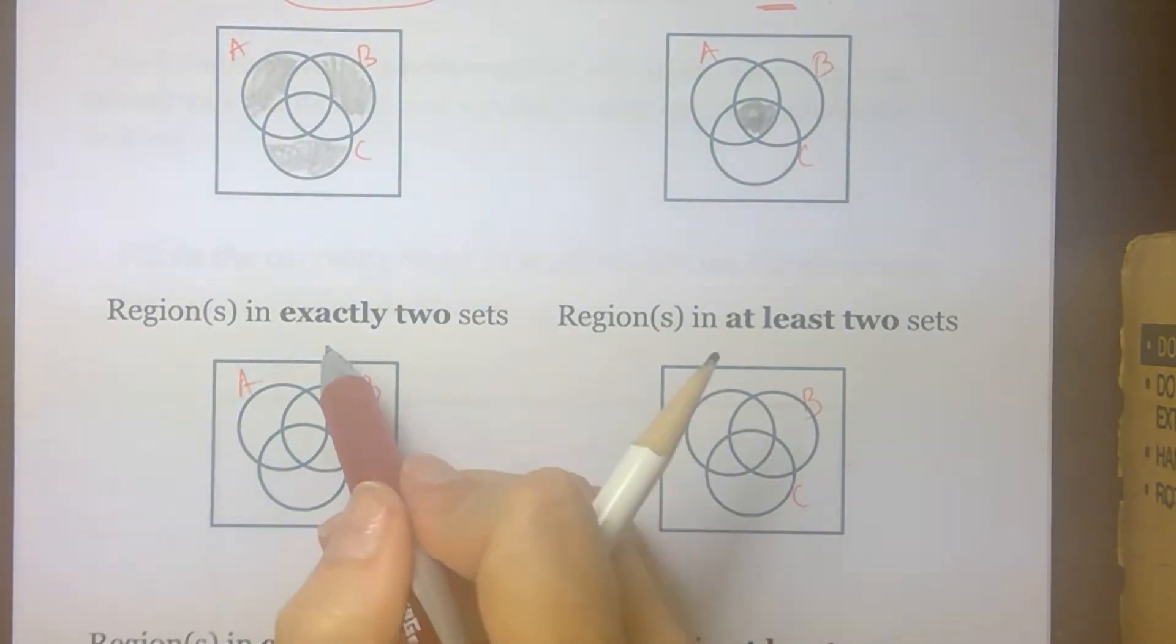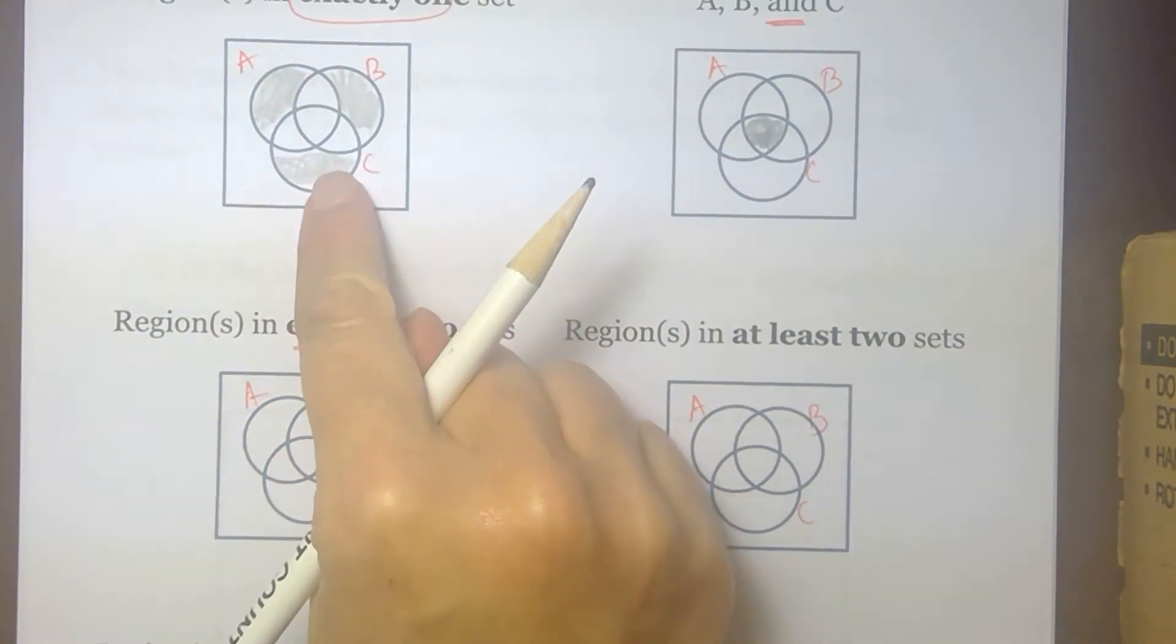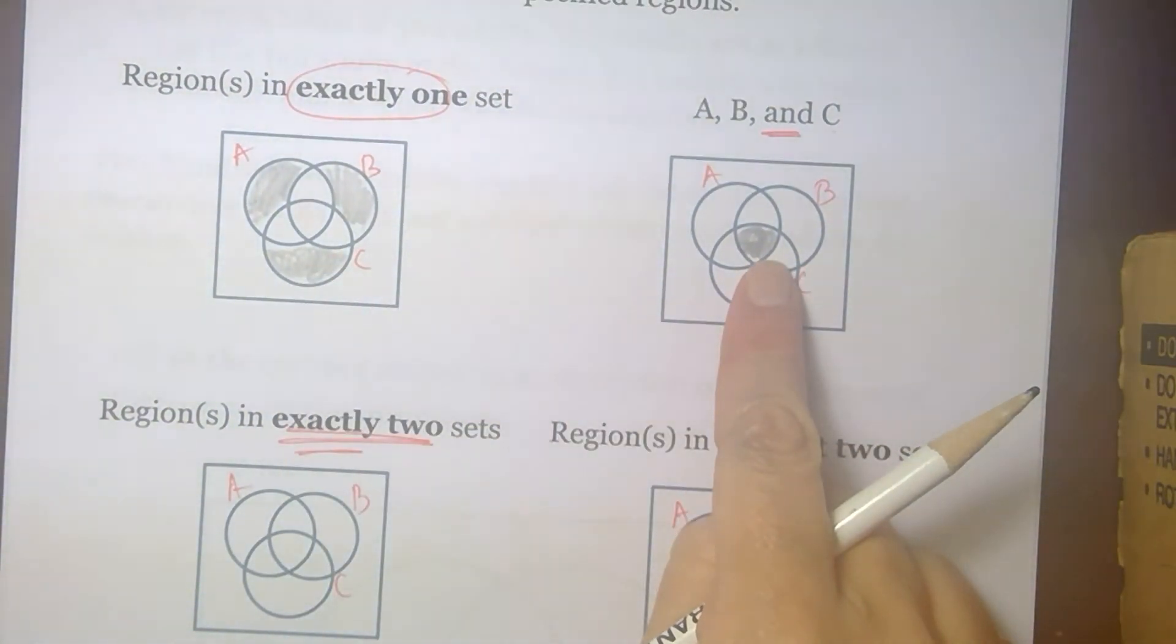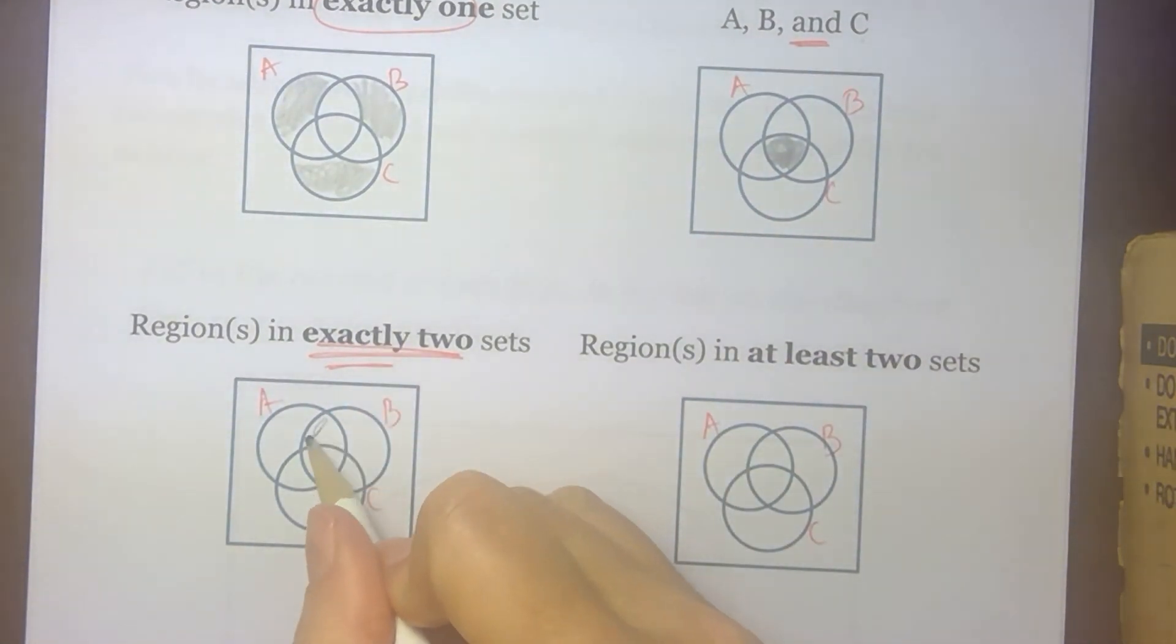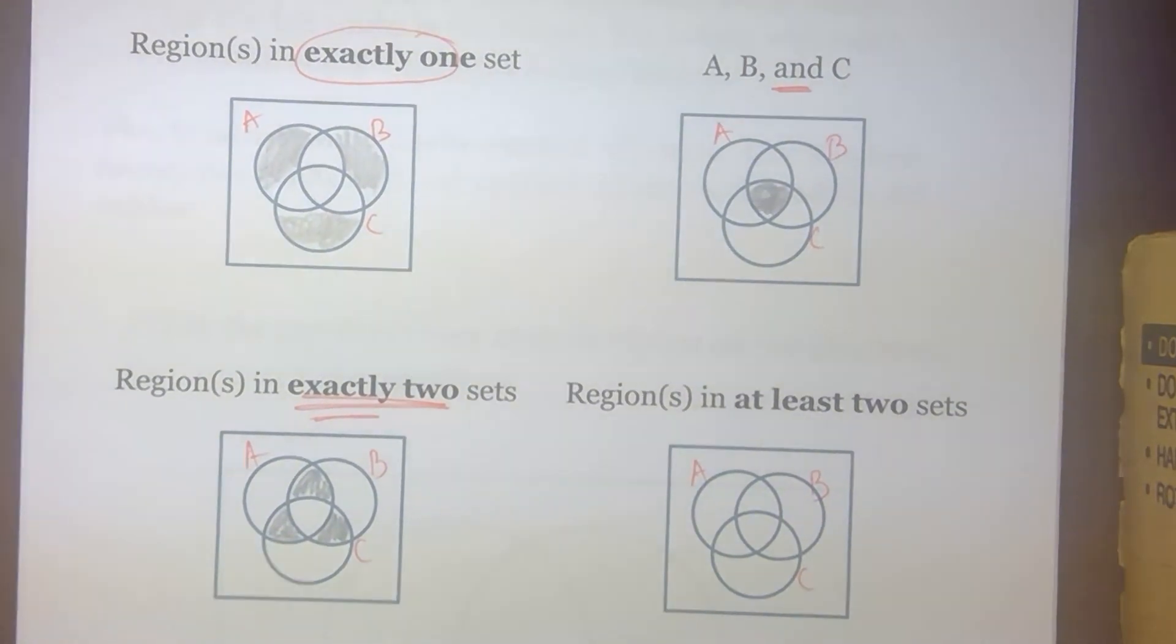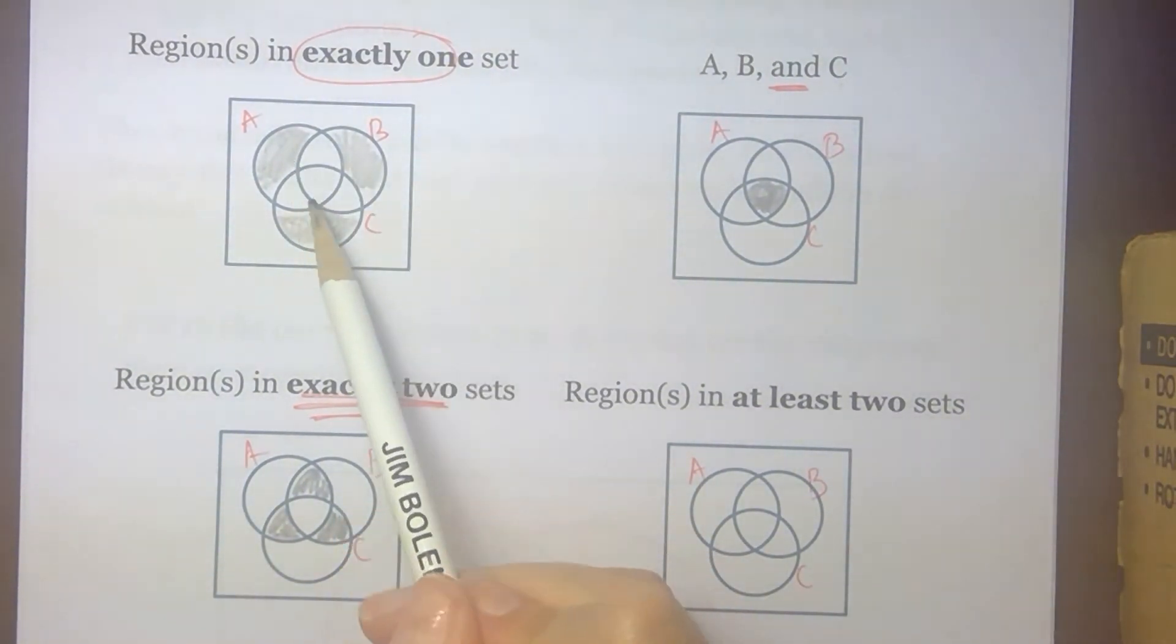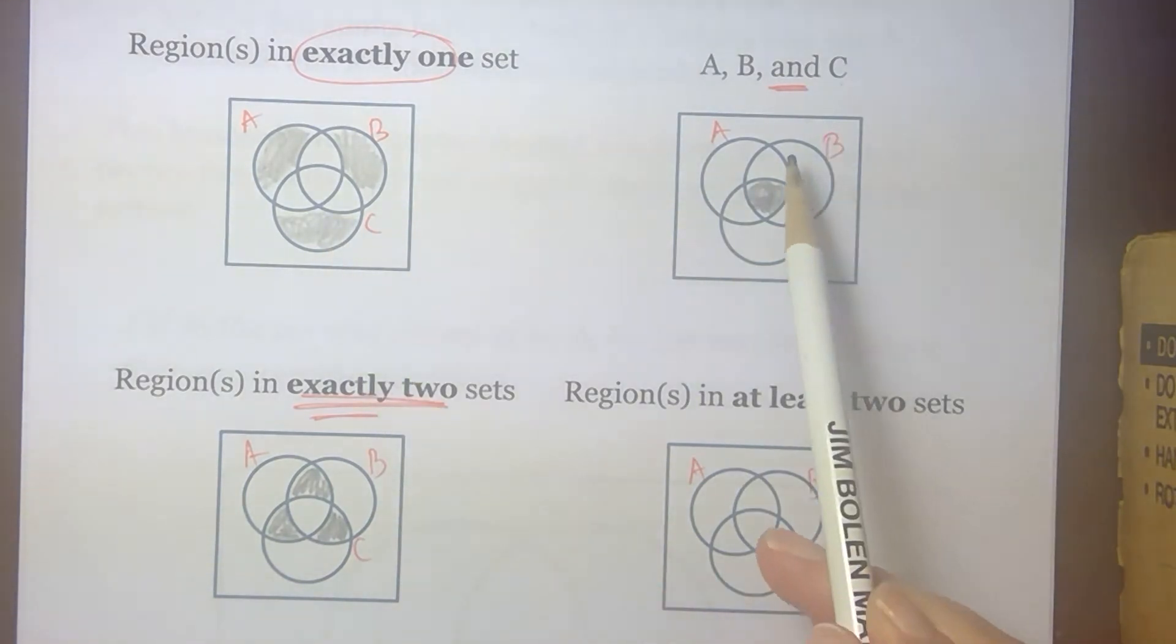Regions in exactly two sets. Exactly two means not just one, and not this one that's in three sets. The one that are in exactly two. So this region is in A and B. This region is in A and C. And this region is in B and C. So you can start seeing the differences. These three regions are in exactly one. This region shares all three. These three regions are in exactly two.